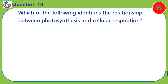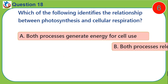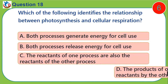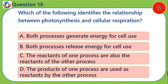Question eighteen: Which of the following identifies the relationship between photosynthesis and cellular respiration? A) both processes generate energy for cell use, B) both processes release energy for cell use, C) the reactants of one process are also the reactants of the other process, D) the products of one process are used as reactants by the other process.